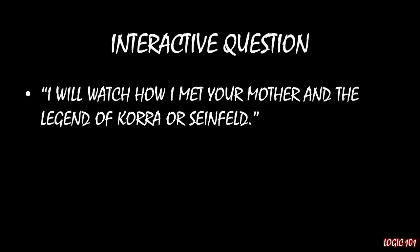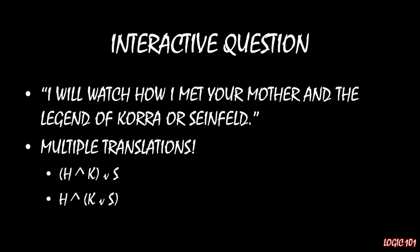The correct answer is that you should have noted two different ways of writing this down. The first way is: (H ∧ K) ∨ S — using H for How I Met Your Mother, K for Legend of Korra, and S for Seinfeld. The second way is: H ∧ (K ∨ S). In the first interpretation, I could be watching How I Met Your Mother and Korra, or just Seinfeld, or all three. In the second, it's definitely true that I'm watching How I Met Your Mother, and in addition I'm watching either Legend of Korra or Seinfeld, or both.